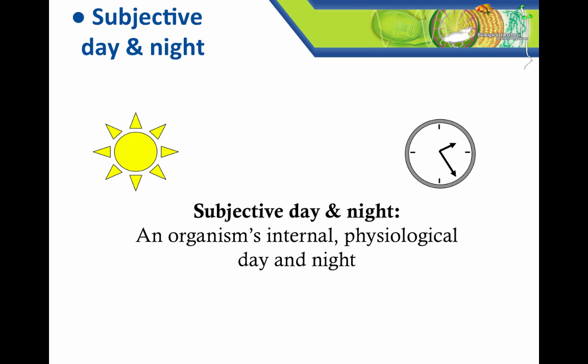In order to discuss later concepts, we need to start by discussing subjective day and subjective night. While as humans we're used to thinking of day and night as defined by either the sun or by a clock, within an organism there also exists an internal, rhythmic, physiological sense of day and night, capable of keeping time even without any cues from the environment, which was discussed in video one, and we call that internal alternating cycle subjective day and subjective night.